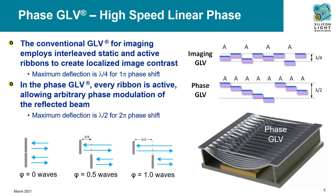The GLV creates a relative phase delay of light through the ribbon actuation. By operating every ribbon individually rather than as static-active line pairs, the GLV becomes a uniquely high-speed phase modulator. Amplitude modulation requires a quarter wavelength deflection while full phase operation requires one half wavelength.